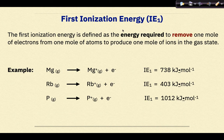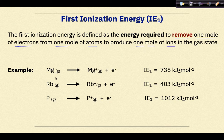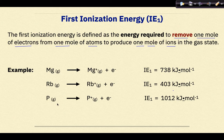The first ionization energy is defined as the energy required to remove one mole of electrons from one mole of atoms to produce one mole of ions in the gas state. For example, magnesium's first ionization energy requires 738 kilojoules per mole. For rubidium, producing rubidium ions by removing its one valence electron has a first ionization energy of 403 kilojoules per mole. For phosphorus, to remove one of its valence electrons, the first ionization energy is 1012 kilojoules per mole.